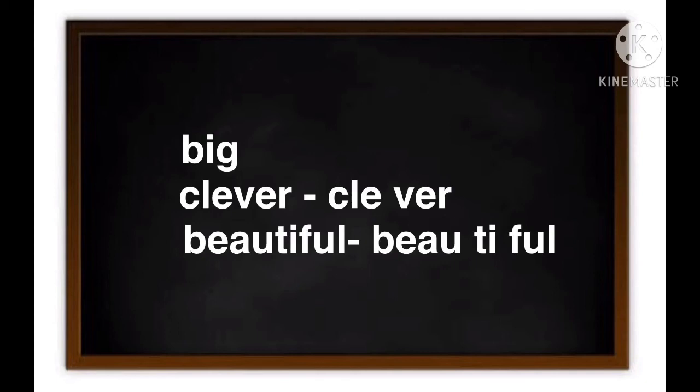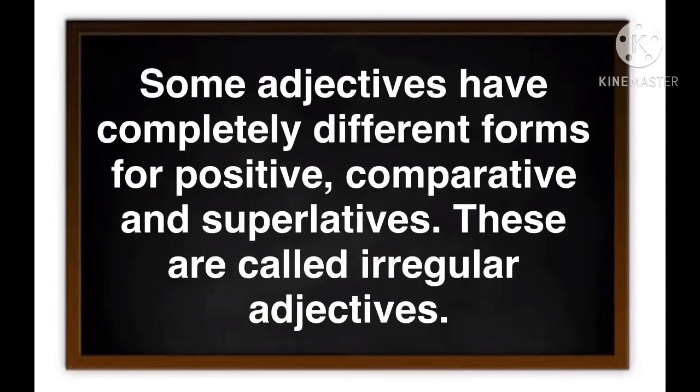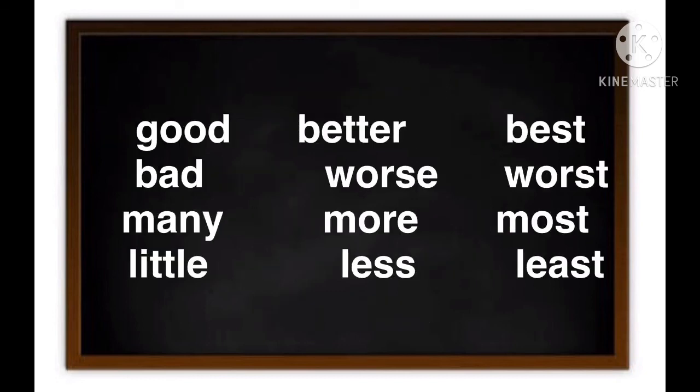Some adjectives have completely different forms for positive, comparative, and superlative degrees. These are called irregular adjectives. Let's see a few examples: good, better, best; bad, worse, worst; many, more, most; little, less, least.